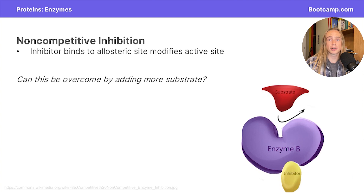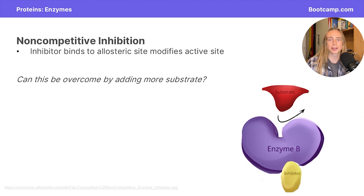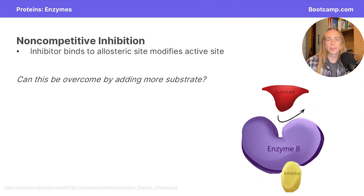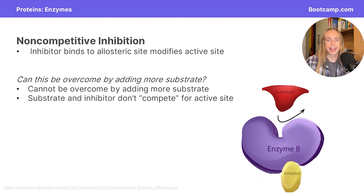Non-competitive inhibition means the inhibitor is not going to be binding to the active site. Instead, the inhibitor binds to an allosteric site on the enzyme, which is just another site that isn't the active site. When an inhibitor binds to an allosteric site, the shape of the active site changes, meaning the substrate is no longer able to bind. Non-competitive inhibition cannot be overcome by adding more substrate, because the inhibitor and the substrate don't compete for the active site — the inhibitor simply deactivates the active site for a while.